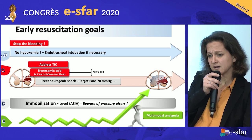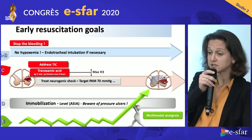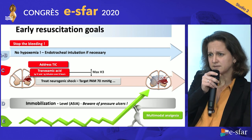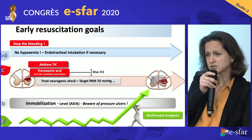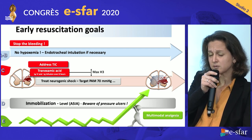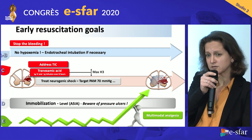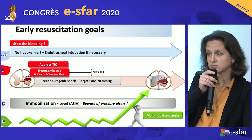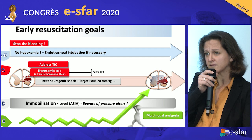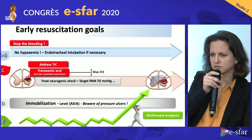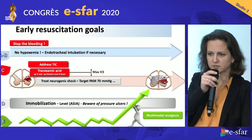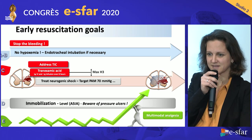Your patient should have multimodal analgesia like any patient. If complaining of pain, the patient should have morphine. Also, some studies show that ketamine from the beginning could have a good effect on the spinal cord injured patient — to avoid chronic pain and for its anti-hyperalgesic effect. That is the package of early resuscitation goals that we can keep discussing if you have any questions. Thank you.